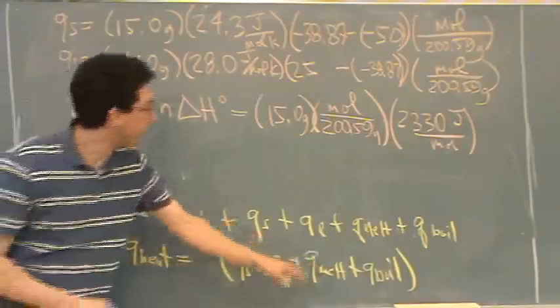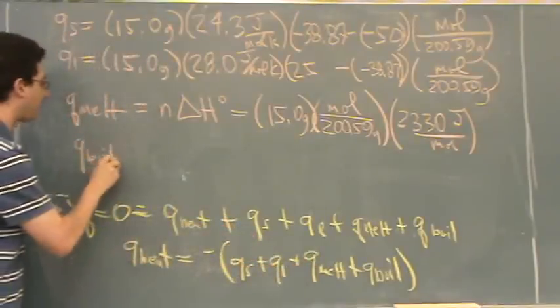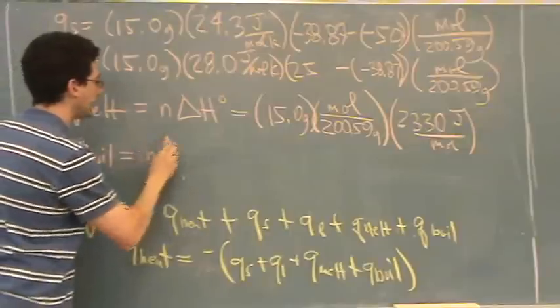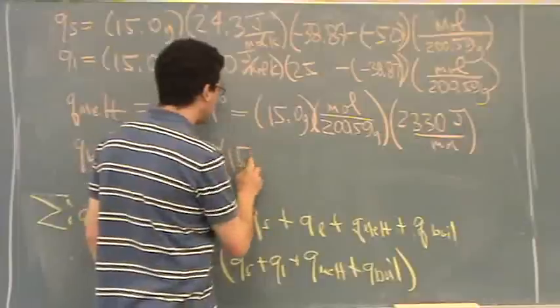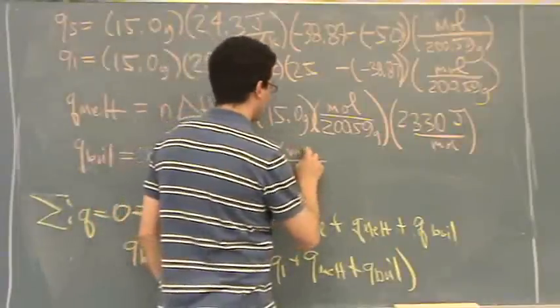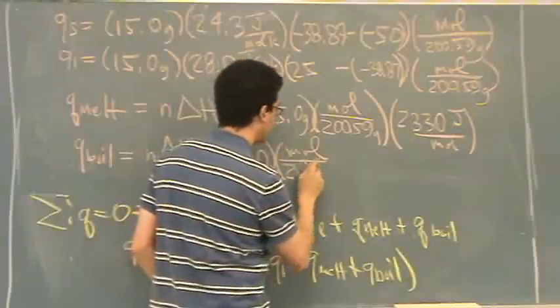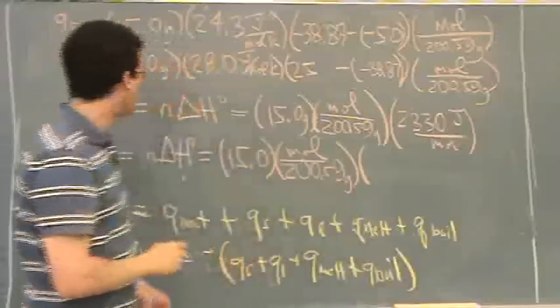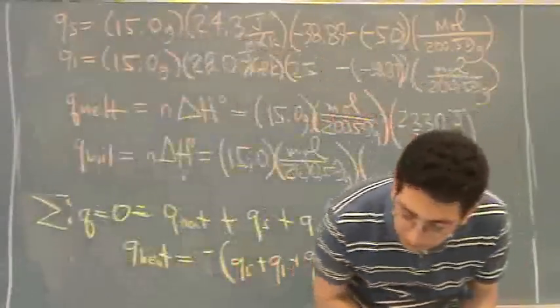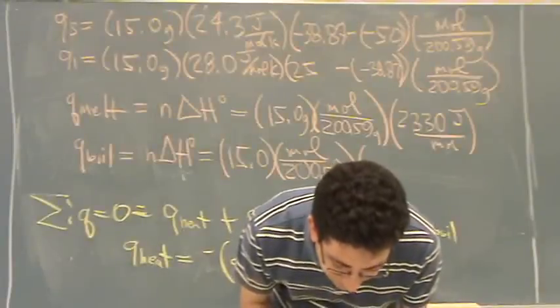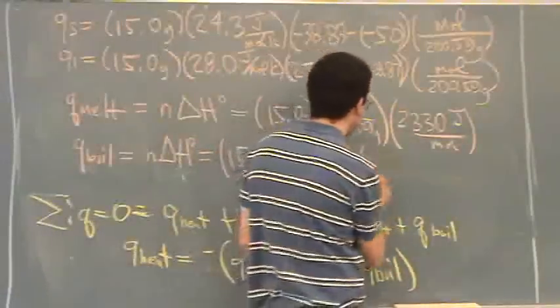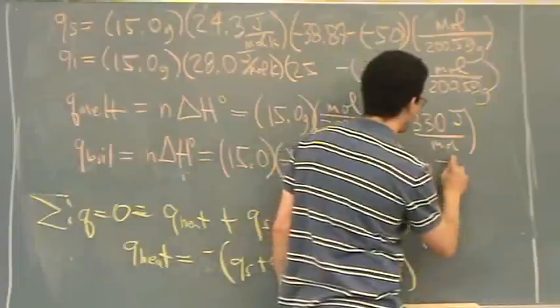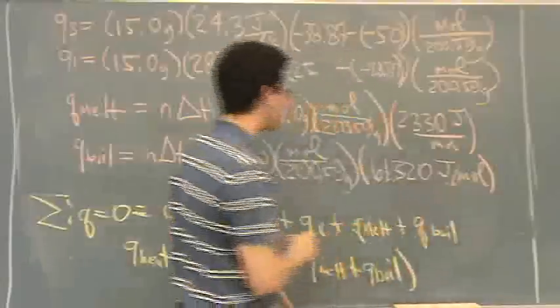The same for the Q boiling. Equals, it's again n delta H. I know it's n delta H because there's no temperature change when you boil. Or in the other case when you melt, there's no temperature change. So in this case again, the 15 times, or really divided by the 200.59 grams per mole times, now I need the Q of boiling. What was that one? Is that 61.32? I believe it's that one. That again is in kilojoules, so it's 61,320 joules per mole. I multiply it by 1,000 and turn it into joules.